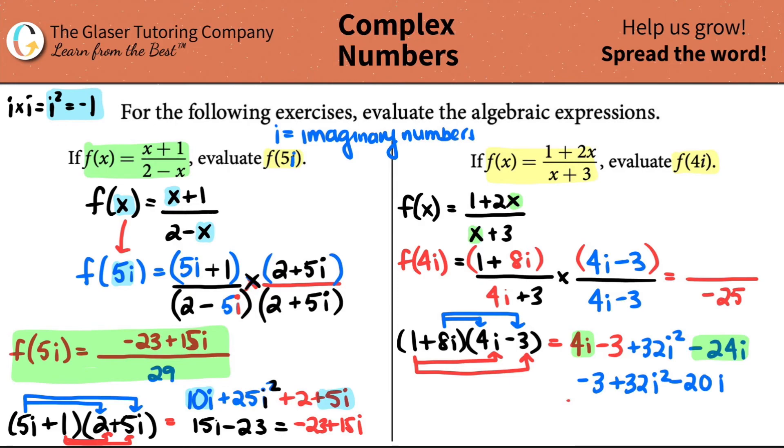So negative 3 plus 32i squared minus 20i. And now I see that nasty i squared. We know that i squared is just a negative 1 times by 32. So this whole thing, 32 times a negative 1 is a negative 32. So I can just plug that in for here. So this whole thing would be negative 32. And then negative 3 minus 32, that would be a negative 35 minus 20i.